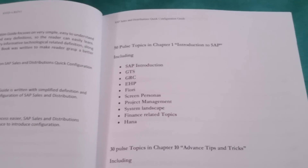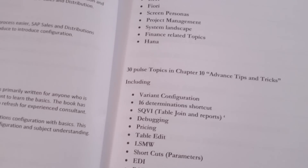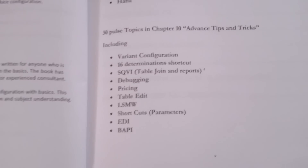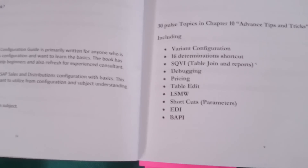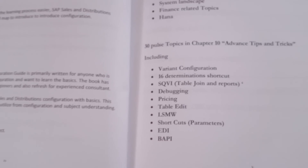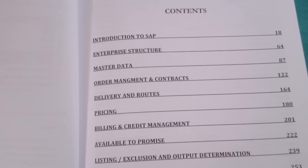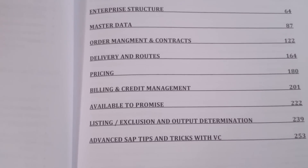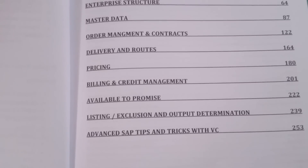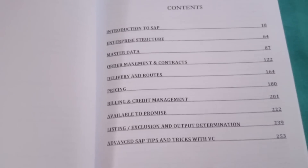The first chapter covers topics related to SAP SD to help learn configuration. The last chapter has 30 plus topics including variant configuration, determinations, and different end-user transactions. The book includes: introduction to SAP enterprise structure, master data, order management and contracts, delivery and routes, pricing, billing and credit management, available-to-promise, listing exclusion, output determination, and advanced SAP tips and tricks with variant configuration.